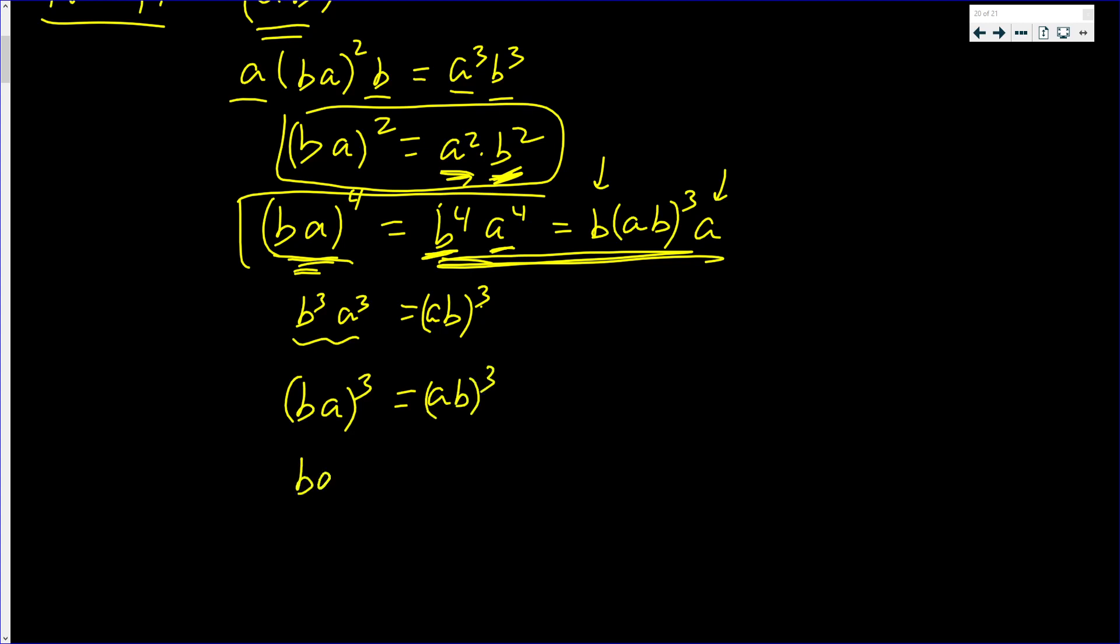Well, (ba)³, bringing this to the other side, times (ab)⁻³. This is the identity.